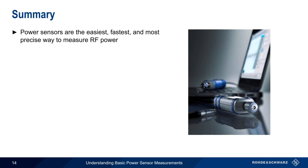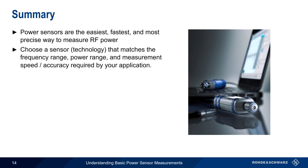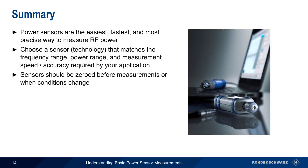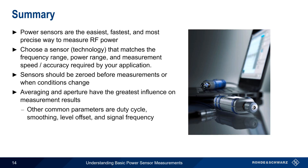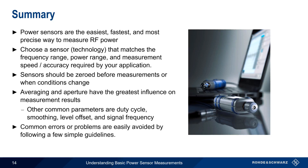In summary, power sensors are the fastest, easiest, and most precise way to measure RF power. When making RF power measurements, it's important to choose a sensor or sensor technology that matches the frequency range, power range, and measurement speed and accuracy needed by your application. Zeroing the sensor before use, or when conditions change, is always a good idea. Two parameters — aperture and average count — can have a significant impact on results. You may also need to adjust duty cycle for pulse signals, smoothing for signals that change sporadically, level offset when using attenuation, and signal frequency when the measured power is concentrated around a single frequency. It's easy to avoid the most common errors by following a few simple guidelines. This concludes our presentation: Understanding Basic Power Sensor Measurements. Thanks for watching.